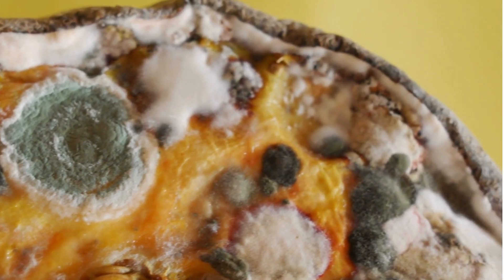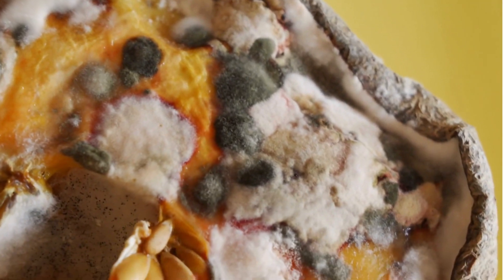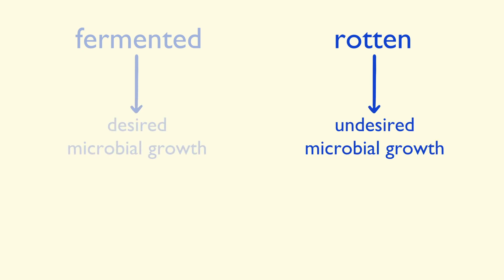So, rotten food is extremely dangerous, right? Well, not exactly. Rotten food is food where some microorganisms have grown in a way that wasn't desirable. This can happen because of two different things. One, because the microbes that have grown are harmful. Or two, because they have transformed the food into something that we find disgusting.